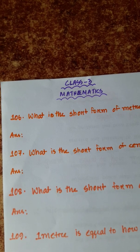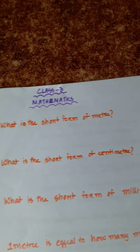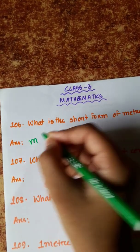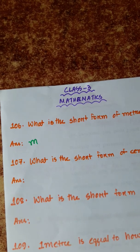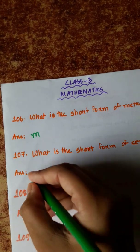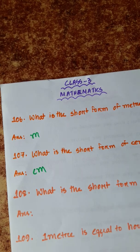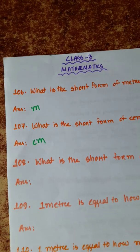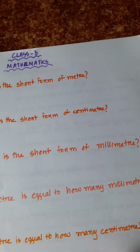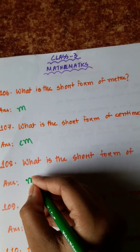Number 106: What is the short form of meter? That is M. Number 107: What is the short form of centimeter? CM. Number 108: What is the short form of millimeter? MM.